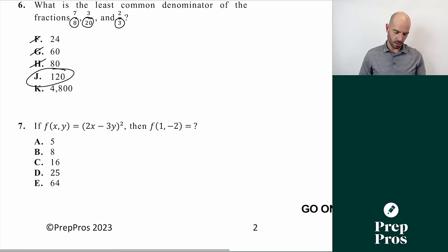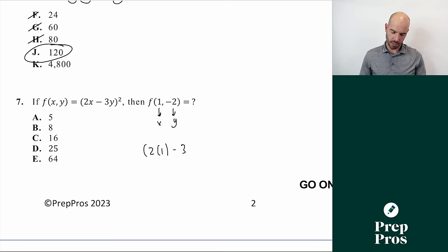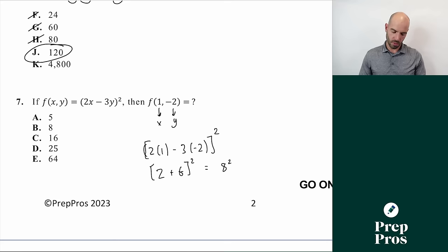Number seven is a functions question. We have f(x, y) equals 2x minus 3y squared. For f(1, -2), we plug 1 in for x and -2 for y: 2 times 1 minus 3 times (-2), all squared. That gives 2 minus (-6) equals 2 plus 6 equals 8, and 8 squared is 64. The answer is E.